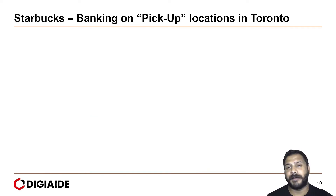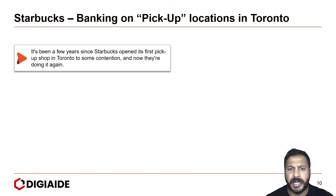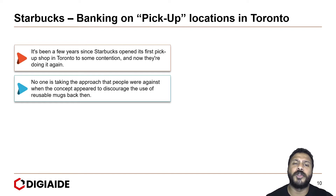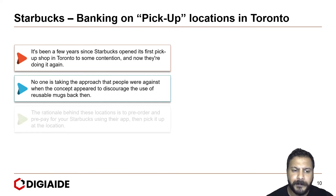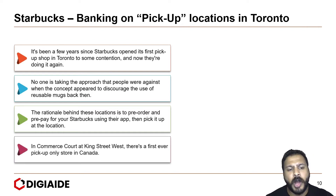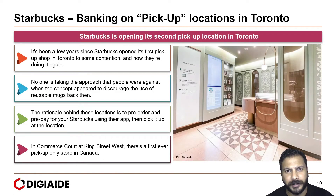Moving on to another example: Starbucks banking on pickup locations in Toronto. It's been a few years since Starbucks opened its first pickup shop in Toronto. The rationale behind this location is to pre-order and prepay for your Starbucks using your app and then pick it up at the location. In Commerce Court and King Street West, there's a first-ever pickup-only store in Canada. This is how the new pickup store looks like.